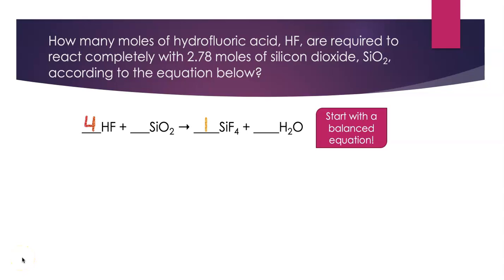Balance the fluorines. If I have one SiF4 on the right, I need 4HF on the left, and then that balances my silicons. If I have one SiO2, I've got four H's and two oxygens on the left, so 2H2O will balance my equation.